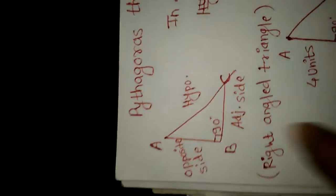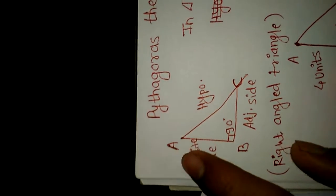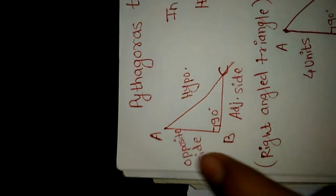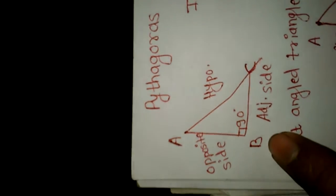So, if we consider triangle ABC where angle B is equal to 90 degrees, because the sum of all angles of a triangle is 180 degrees, this makes it a right-angle triangle.